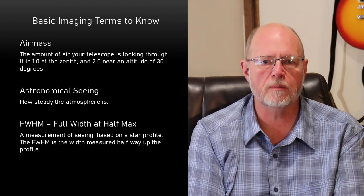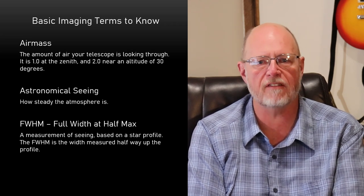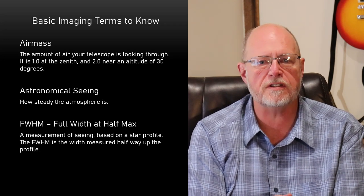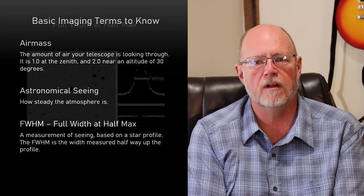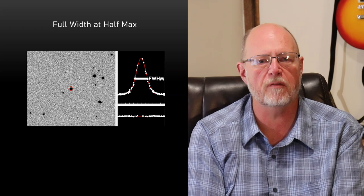A related term is FWHM, or the full width at half max. This is a measurement of seeing based on a star profile. When the seeing is poor, the profile is wider and the peak is lower. The FWHM is the width measured halfway up the profile.